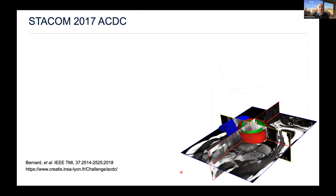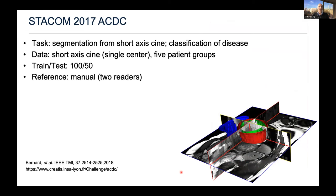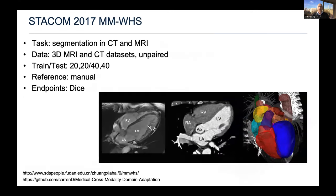A couple of major challenges worth highlighting: ACDC, run out of Creatis in Lyon, was one of the first challenges after the machine learning revolution around 2016 and was a segmentation challenge with a lot of interest. Also that year, Zhiyuan Zhang from Fudan in China made available MRI and CT datasets, unpaired, for domain adaptation — the idea being that you train your algorithm on one domain and test it on another — and this has been picked up and used in a variety of contexts since.